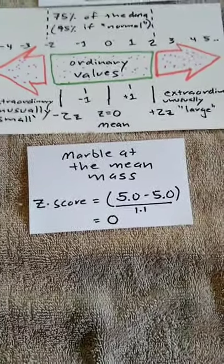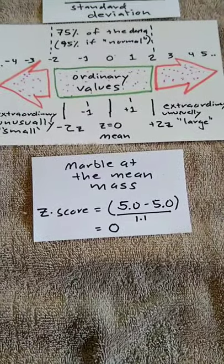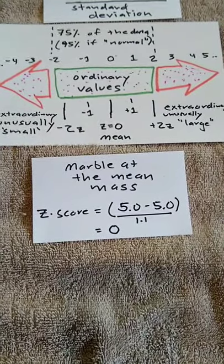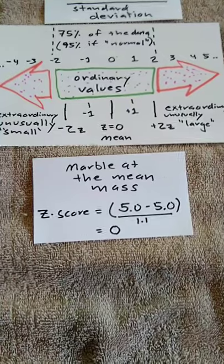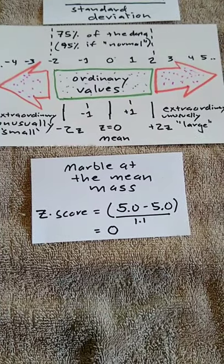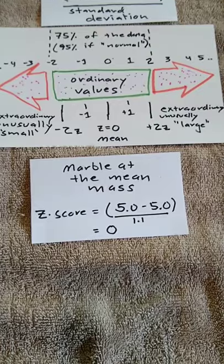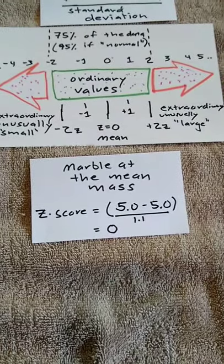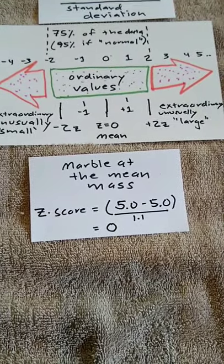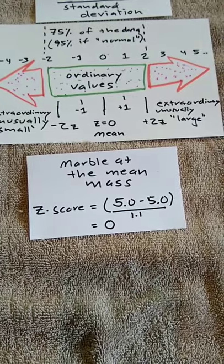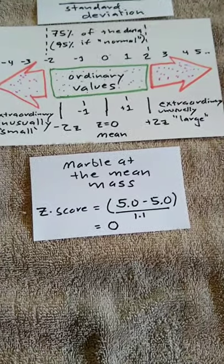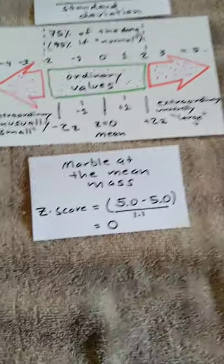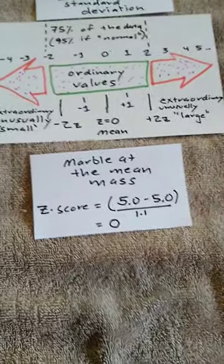And with that, we wrap up our look at z-scores. They can be calculated for any data value. You simply subtract the mean, don't forget the parentheses, subtract the mean first, and then take that difference and divide by the standard deviation. And that will give you the z-score and give you an idea of where that data value stands, both relative to the mean and in terms of standard deviations away from the mean.